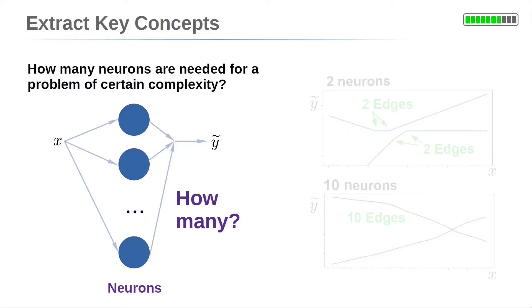To give you a feeling what I mean by key concepts, here is an example. This example is referred to a very common question. How many neurons do I need for a certain problem? Of course, you will not know the exact number of neurons in advance. But you can get a feeling how the number of neurons is related to the complexity of the problem.